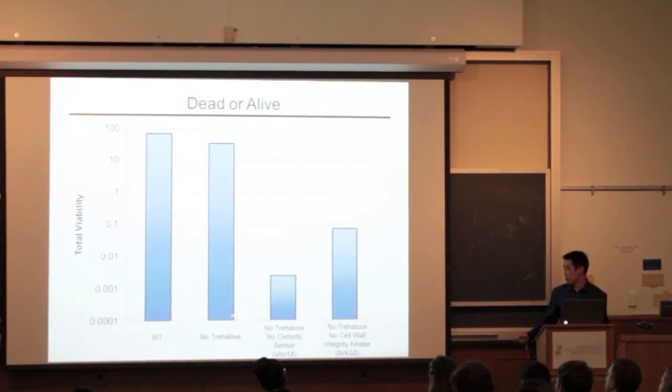You see that wild type and no trehalose mutant alone have cells that are mostly alive. However, if you have two mutations, no trehalose and another target gene, there is a huge drop in the number of cells that are alive.